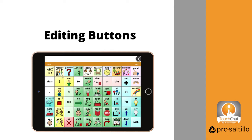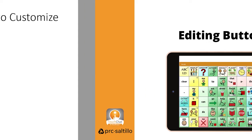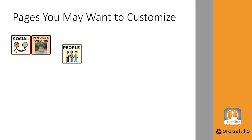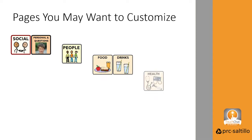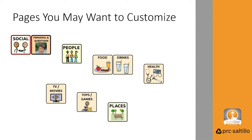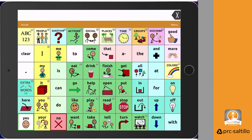TouchChat is a fully customizable AAC app from PRC Saltillo. Once you've copied a vocabulary file for your AAC learner, you're able to edit the buttons in a variety of ways. The vocabulary files in TouchChat come with many pre-programmed pages with lots of pre-programmed words. There are some pages that you will want to personalize for your AAC learner, like their personal information, people in their lives, favorite foods or drinks, medical needs, TV shows, toys and games, or the places they like to go.